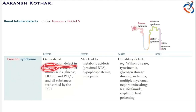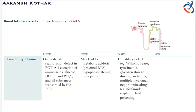In Fanconi syndrome, there is a generalized reabsorption defect in the proximal convoluted tubule. That means the reabsorption that takes place in the proximal convoluted tubule is impaired, which results in inappropriate reabsorption of substances like amino acids, glucose, bicarbonate, phosphate, and all substances absorbed by the proximal convoluted tubule. Since these substances are not being reabsorbed, their excretion in the urine increases.